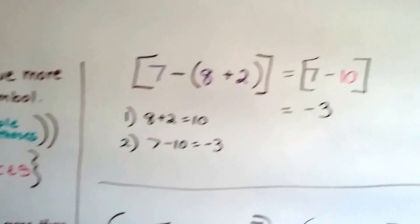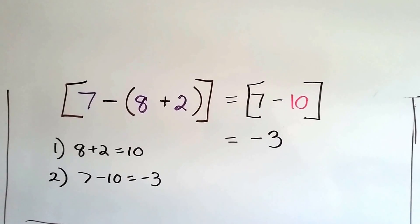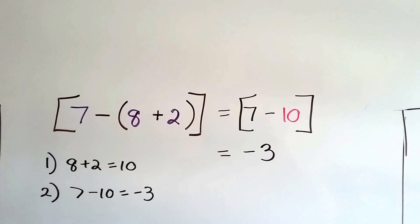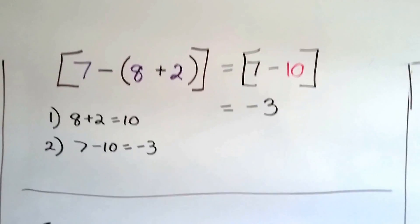Let's try this one. We've got 7 inside of brackets with 8 plus 2 inside of parentheses. We do the parentheses first. 8 plus 2 is 10. Now we've got 7 minus 10. 7 minus 10 is negative 3. That one wasn't too bad, was it?